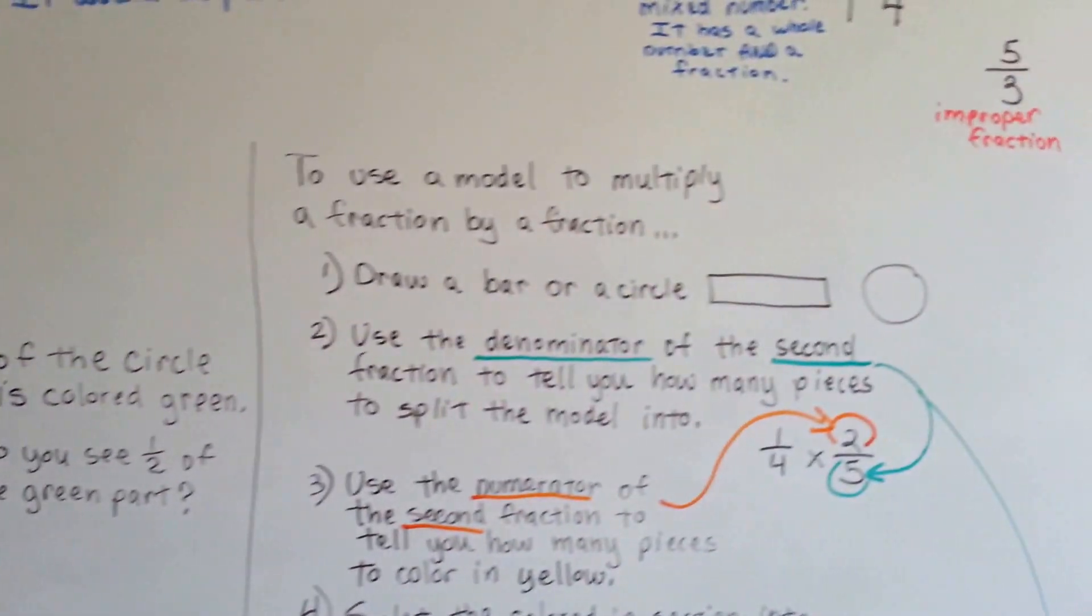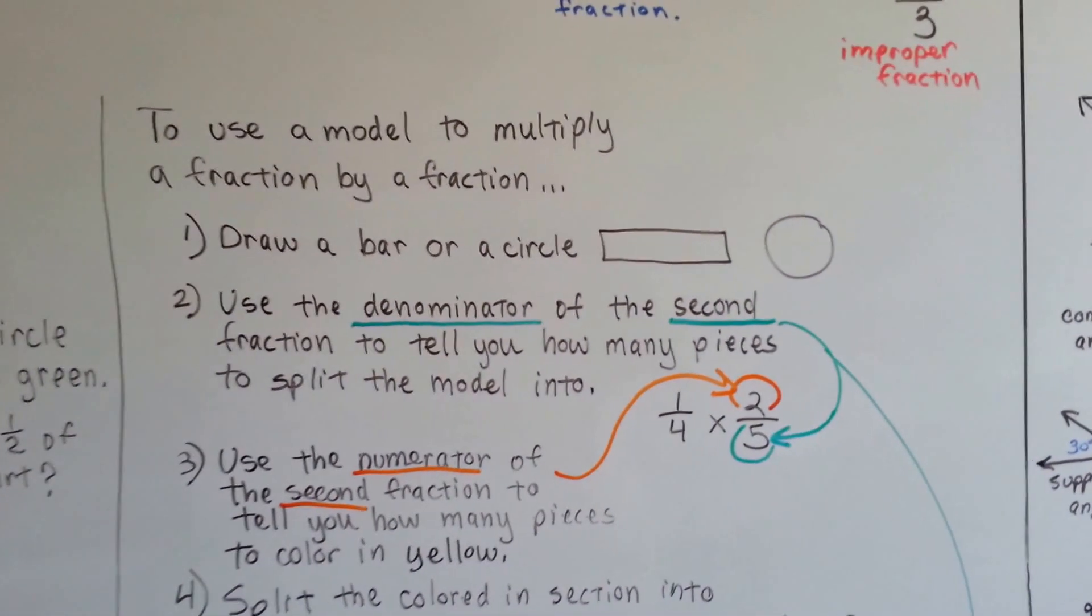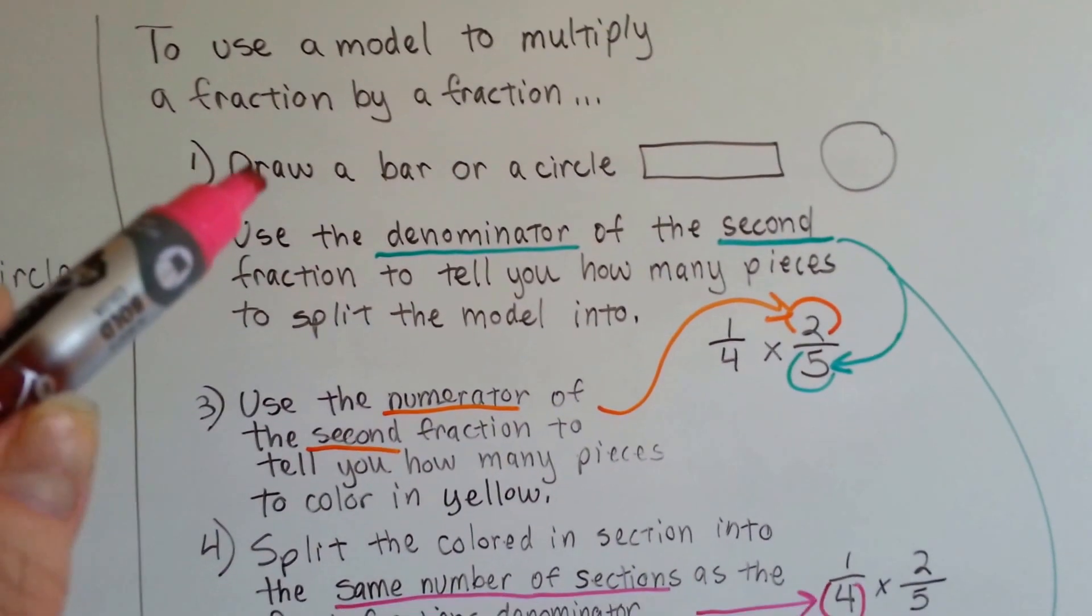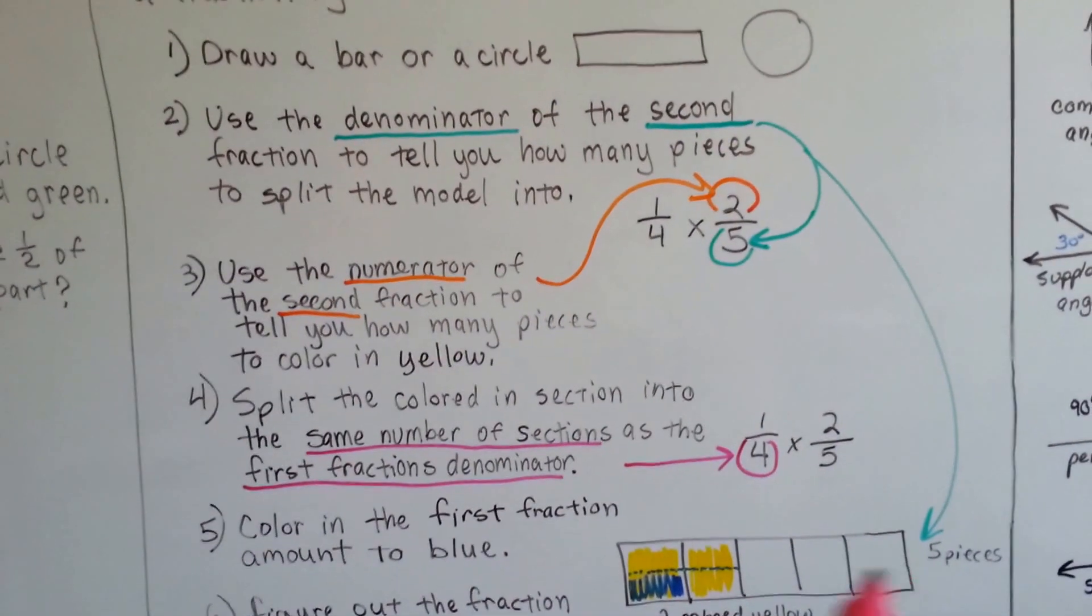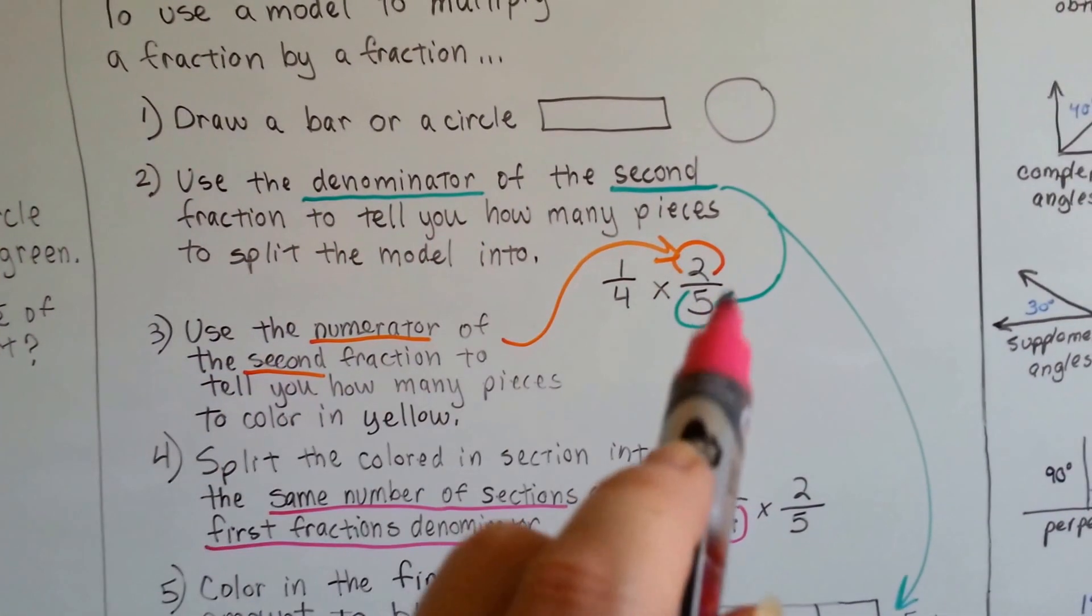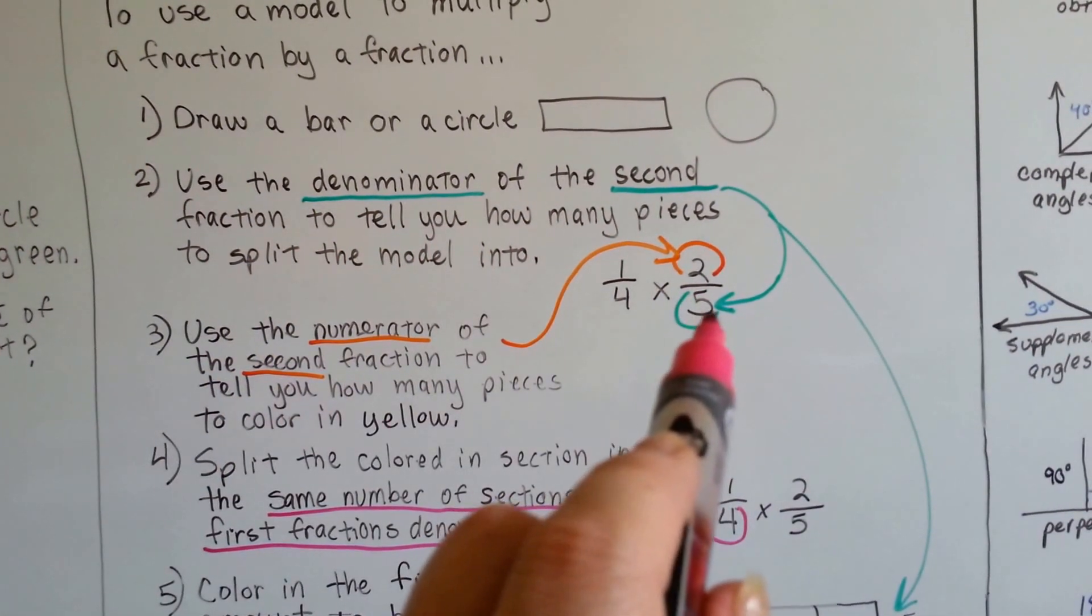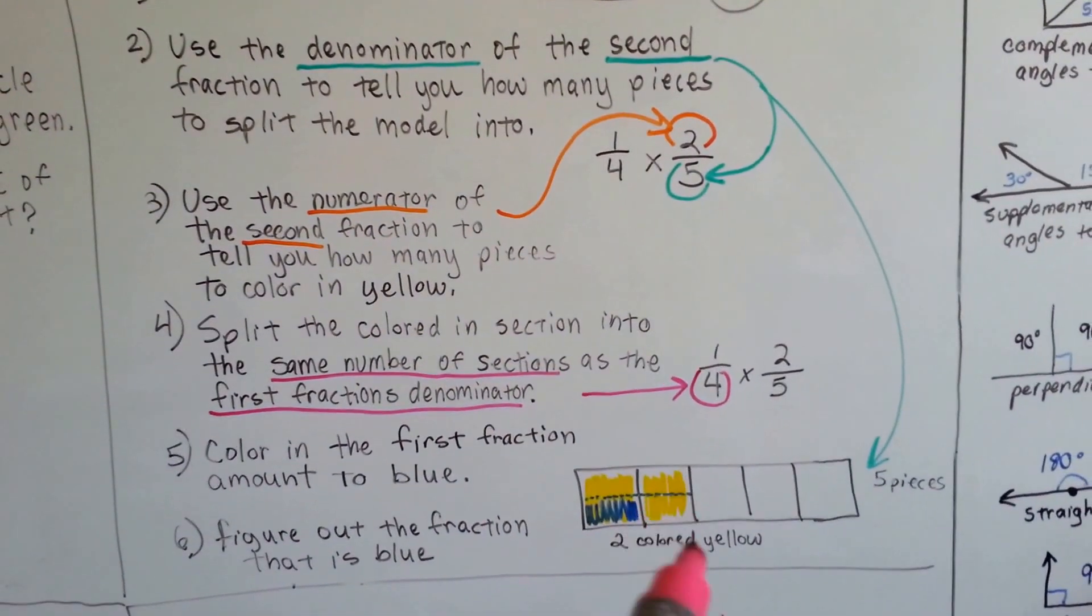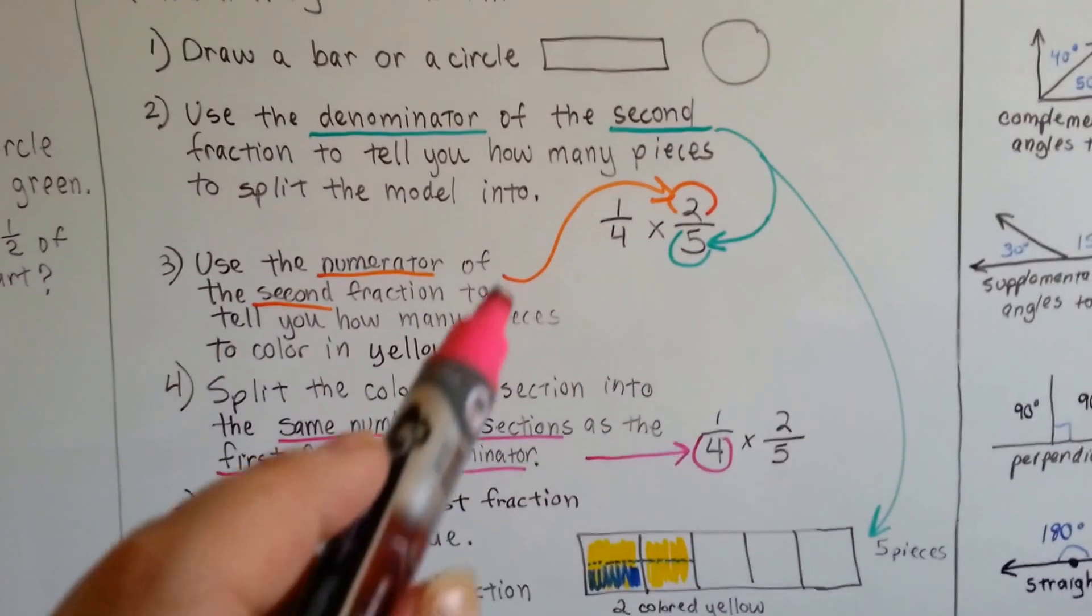So here's what we need to do to make a model to multiply a fraction by a fraction. The first thing we do is we have to draw a bar or a circle. So I drew a bar. We use the denominator of the second fraction to tell us how many pieces to split the bar into: 1, 2, 3, 4, 5. 5 pieces.